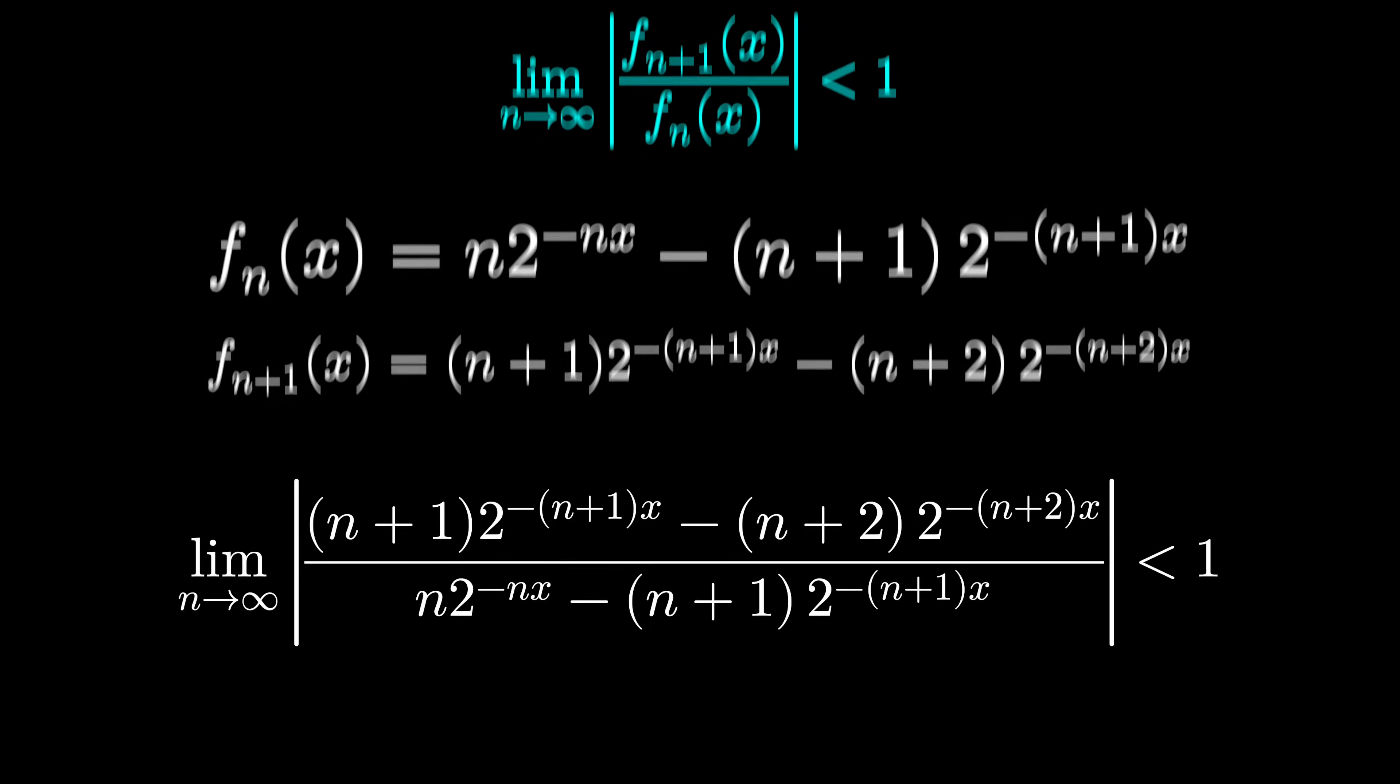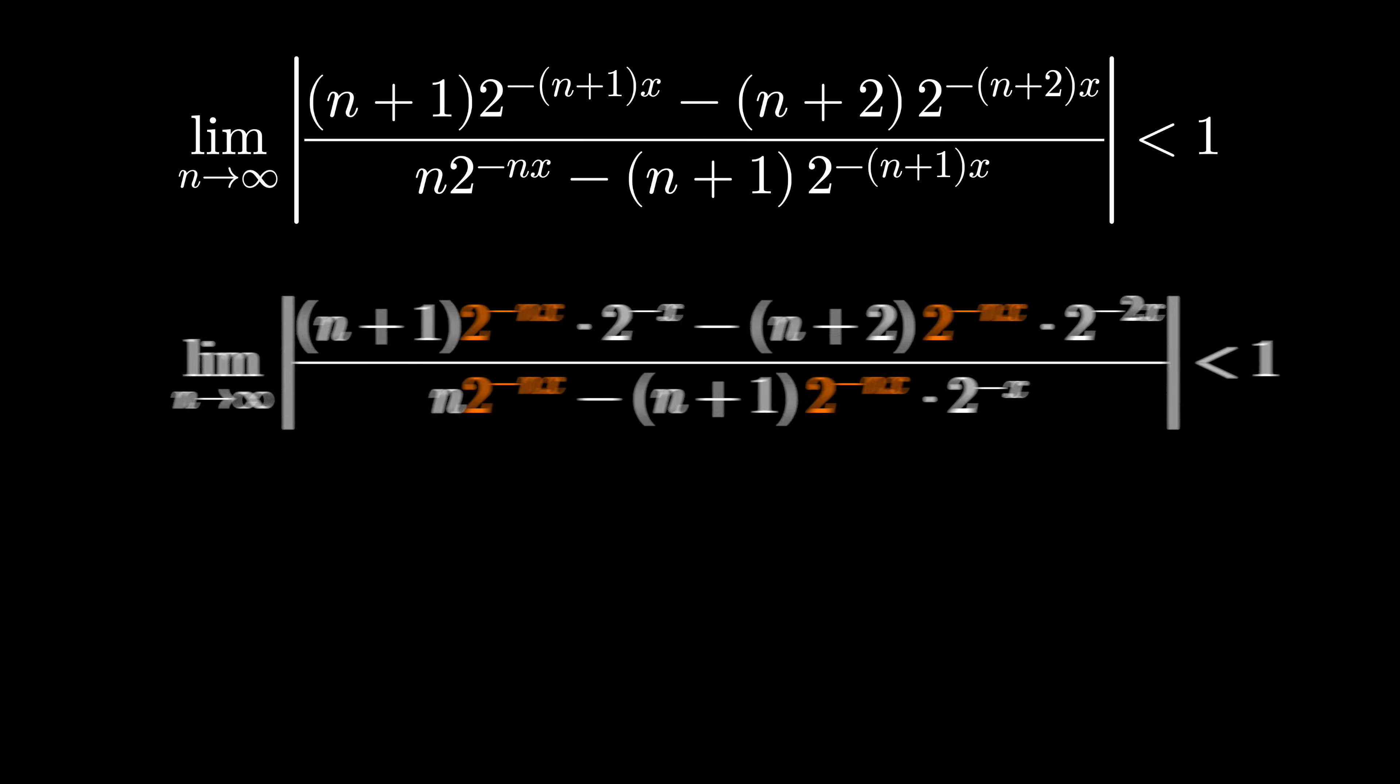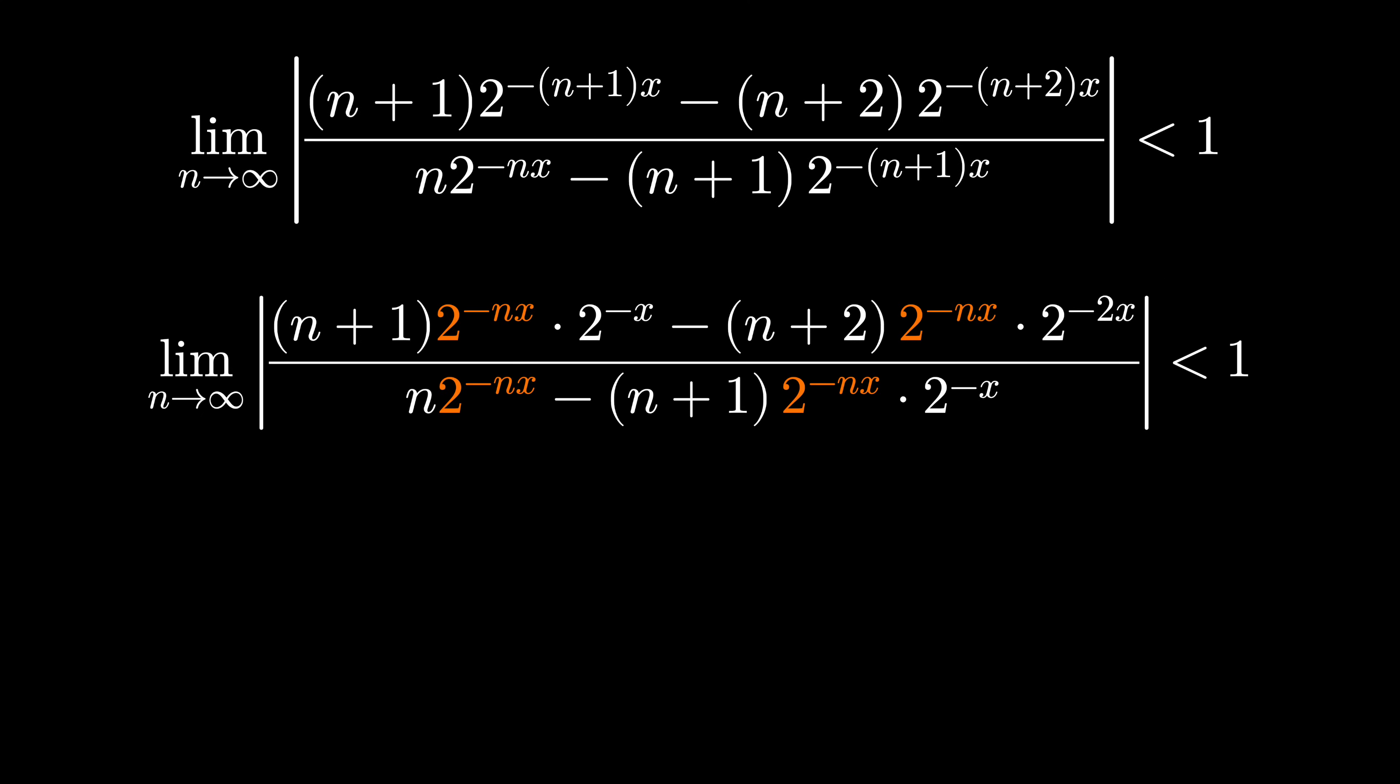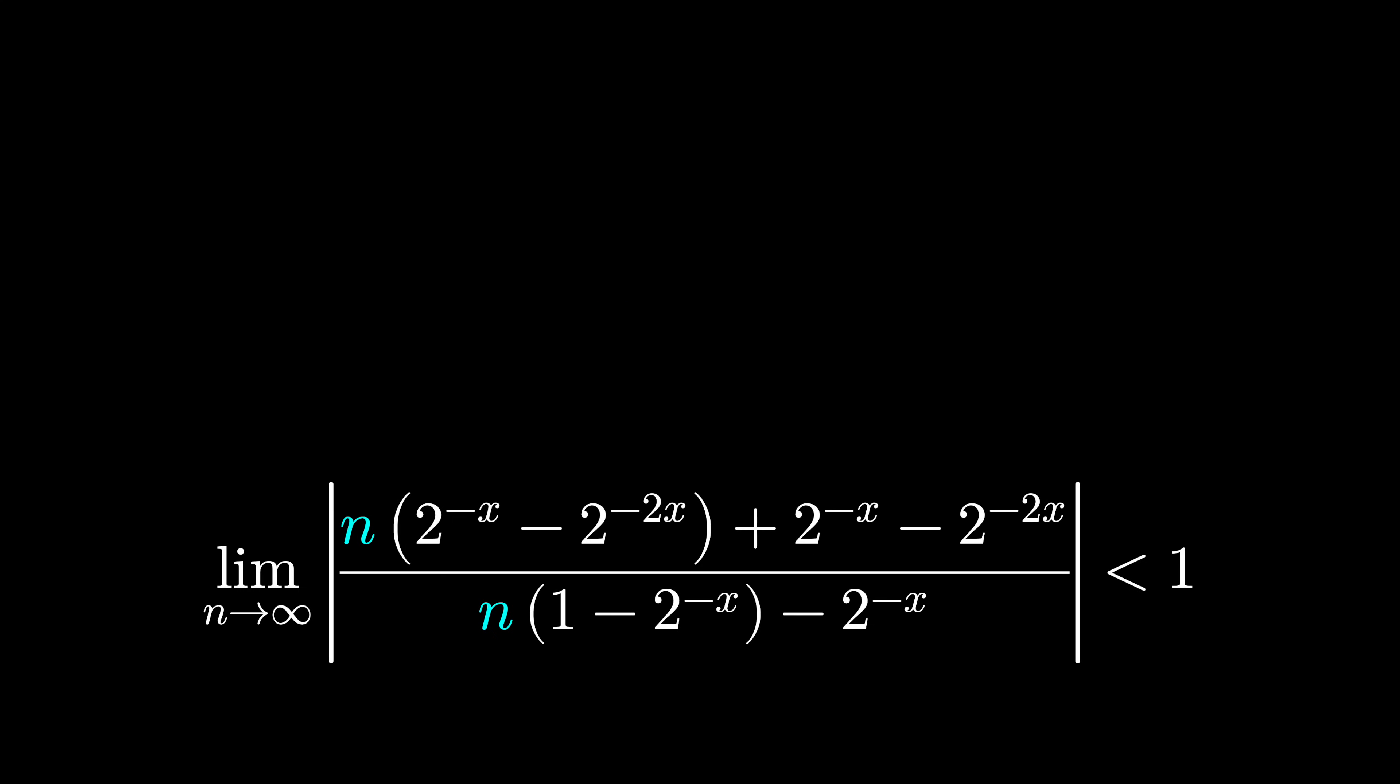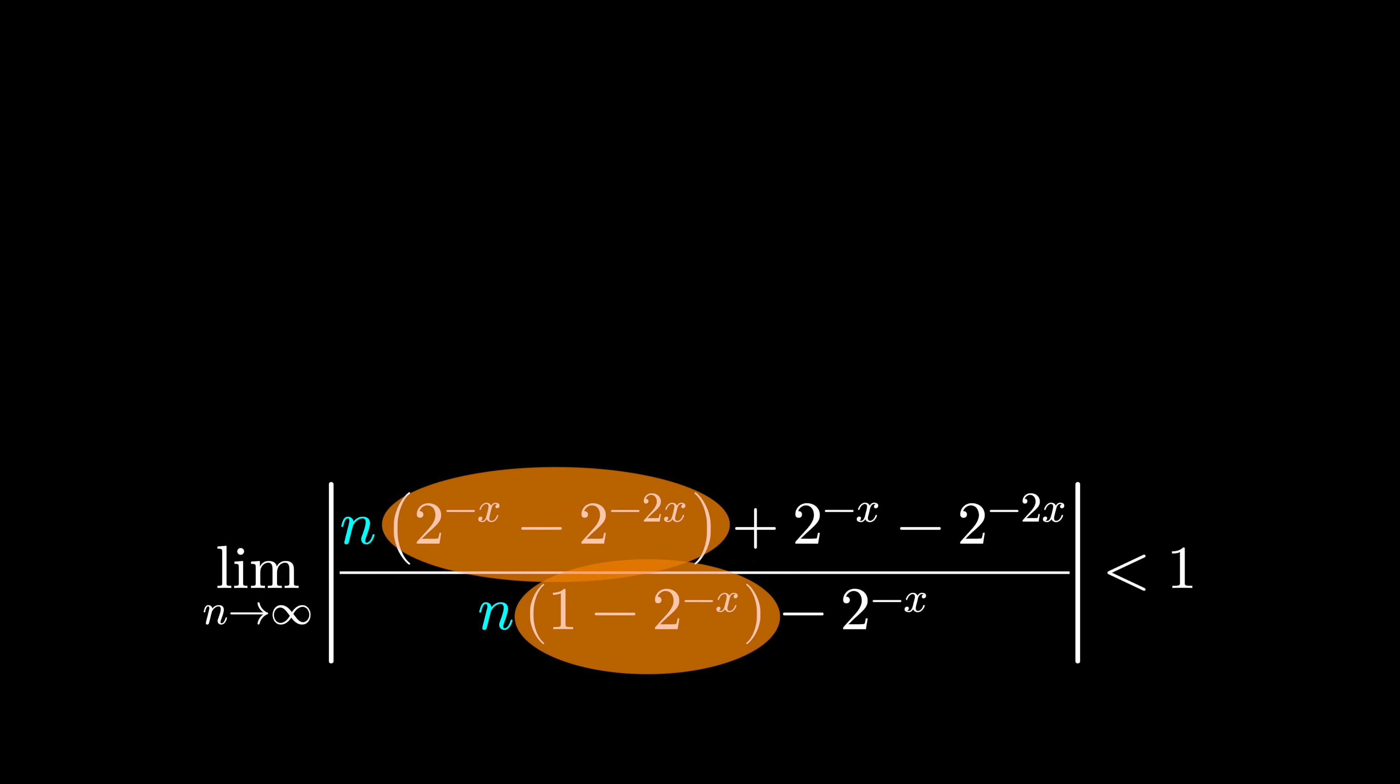Fortunately after we distribute we're seeing lots of things that can cancel out, and this makes our job a little bit easier. Group by powers of n so that we can take this limit, and I'll just use the rule that my old calculus teacher used to say, the highest powers do the talking. Since they're both n to the first, they go at the same rate, we essentially just look at the coefficients, which are these two terms.